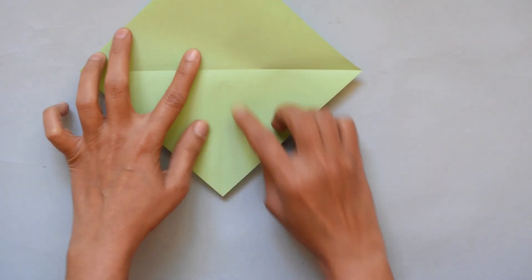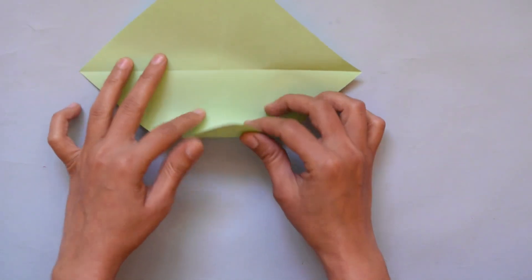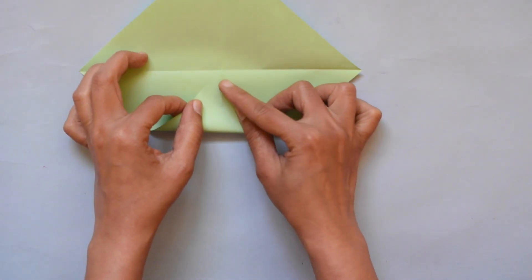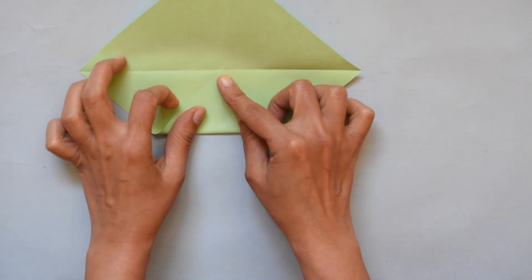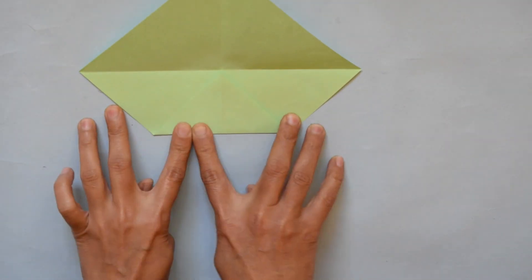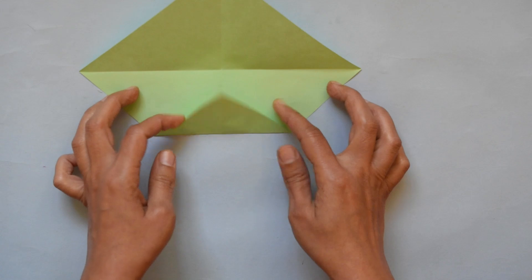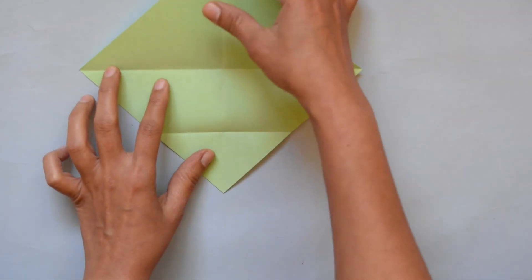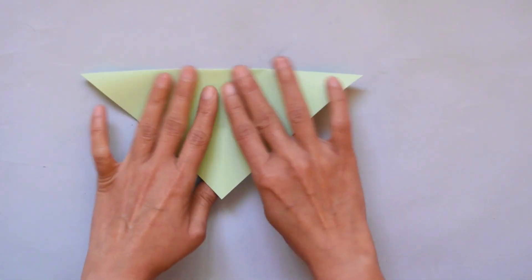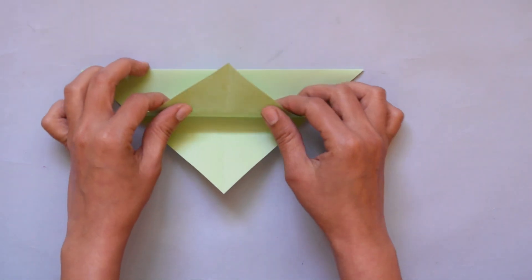Here we have the center point. Put this corner on that center point and press it. Now open it. Fold from the middle and fold it back like this.